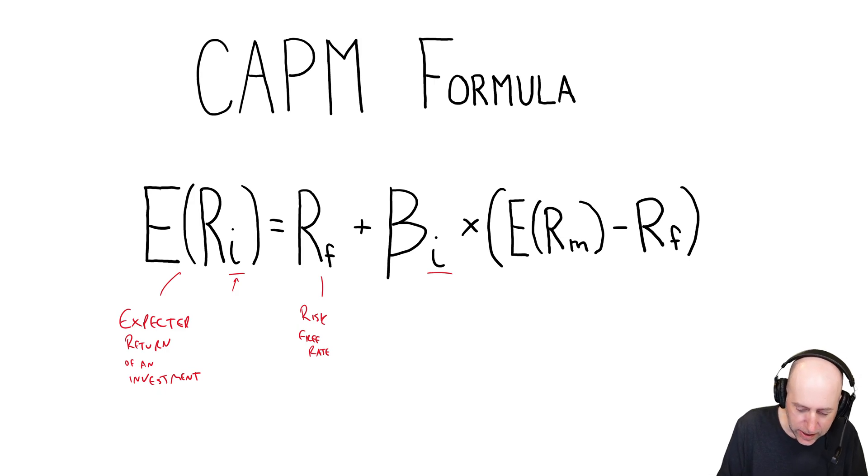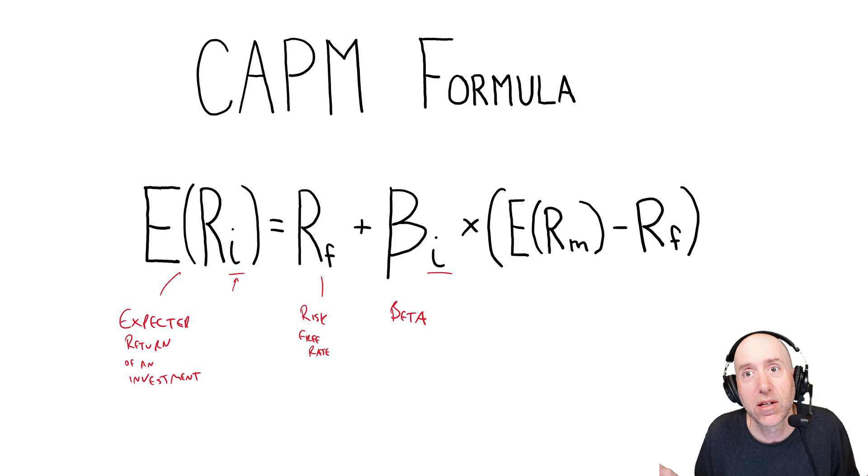So B is for beta. So beta, and that's just the word we use, beta, and that's a measure of the volatility of a stock and the volatility is a risk measure. So beta of the investment, the Coke in our example.